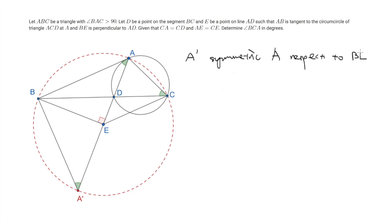And this allows us to say that these three green angles are equal to each other. Because by symmetry we have that angle BA'E equals angle BAE. And moreover since AB is tangent to the circumcircle ACD, this means that this angle equals angle ACB.